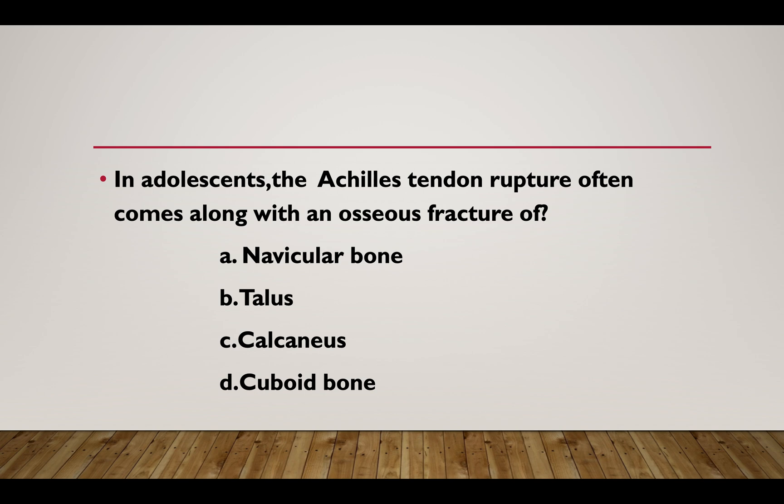In adolescence, the Achilles tendon rupture often comes along with an osseous fracture of: Option A: Navicular bone. Option B: Talus. Option C: Calcaneus. Option D: Cuboid bone. Answer: Option C — Calcaneus.